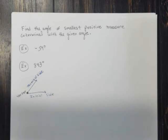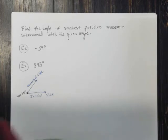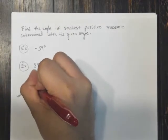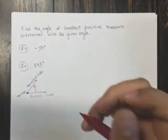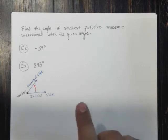Here's a textbook definition: coterminal angles are angles which have the same initial side and the same terminal side. They start and end at the same point. However, they differ by the amount of rotations that occur.